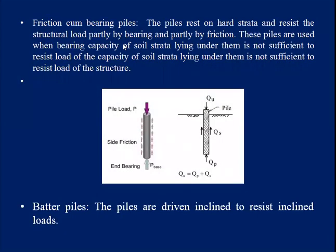Next is the friction-cum-bearing pile. The pile rests on hard strata and resists the structural load partially by bearing and partially by friction. These piles are used when the bearing capacity of the soil strata beneath them is not sufficient to resist the structural load alone. The ultimate load is equal to the side friction load plus end bearing resistance, combining both mechanisms.